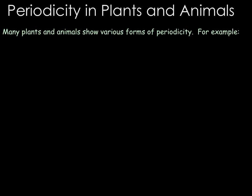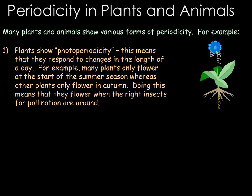Many plants and animals show a form of periodicity or circadian rhythms. Periodicity means that you are changing in response to a stimulus, while circadian rhythms look at daily life cycles. A classic example of periodicity is photoperiodicity, which is something plants show — they respond to changes in the length of the day. For example, many plants will only flower at the start of summer, whereas some will only flower in autumn, so they flower when the right insects for pollination are around. Plants detect changes in light levels to determine what season they are in.